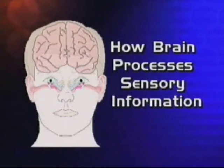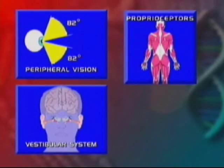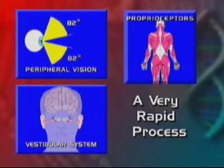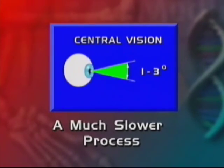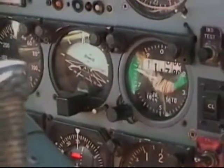An understanding of how the brain processes sensory information is important so you can recognize and correct spatial disorientation if it occurs. Information from peripheral vision, vestibular signals, and proprioceptors are acquired and processed subconsciously — this process is very rapid. Information from central vision is acquired and processed through a conscious process, which is much slower, and this is a factor in your instrument cross-check for feedback on your status in flight.